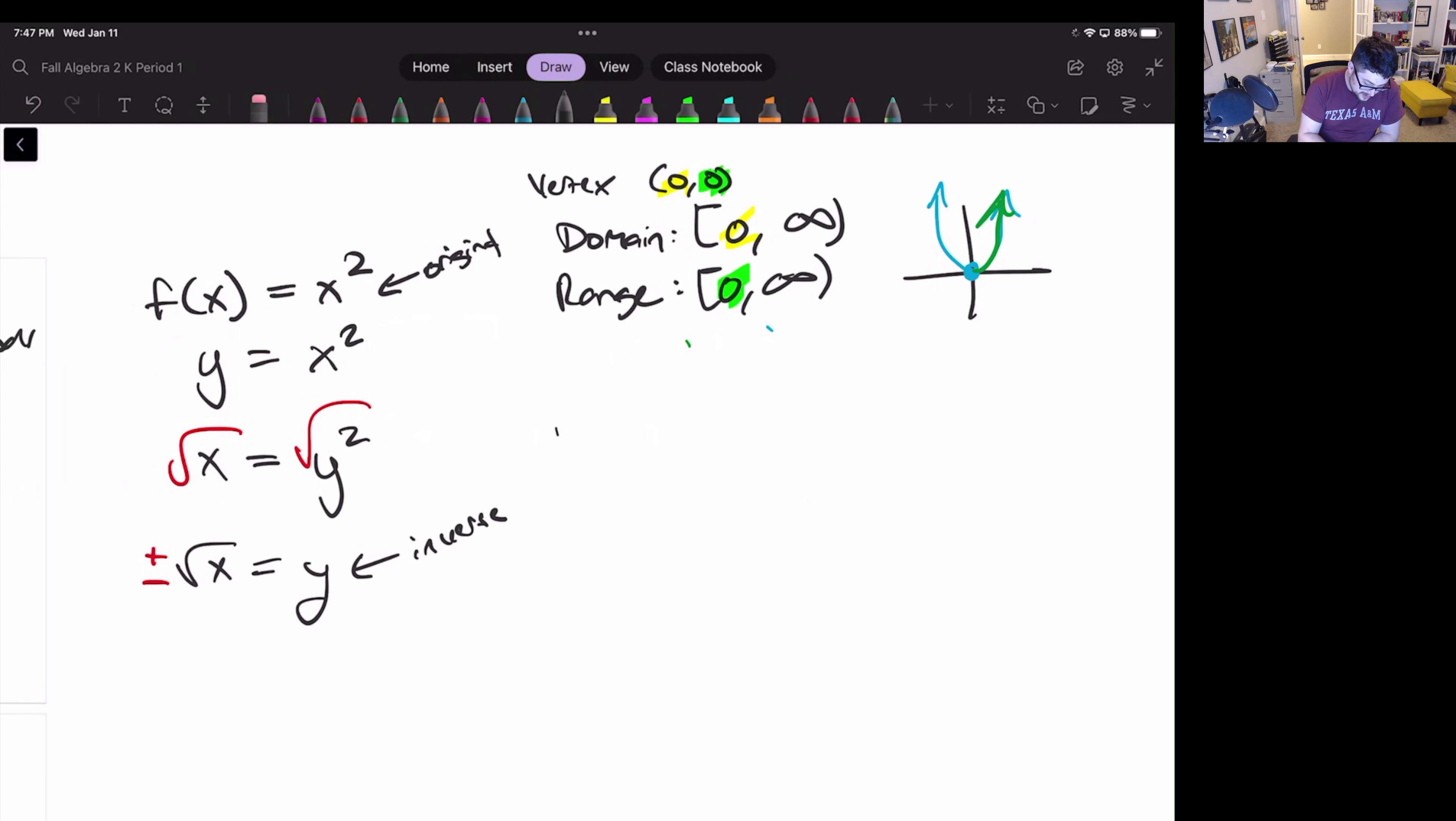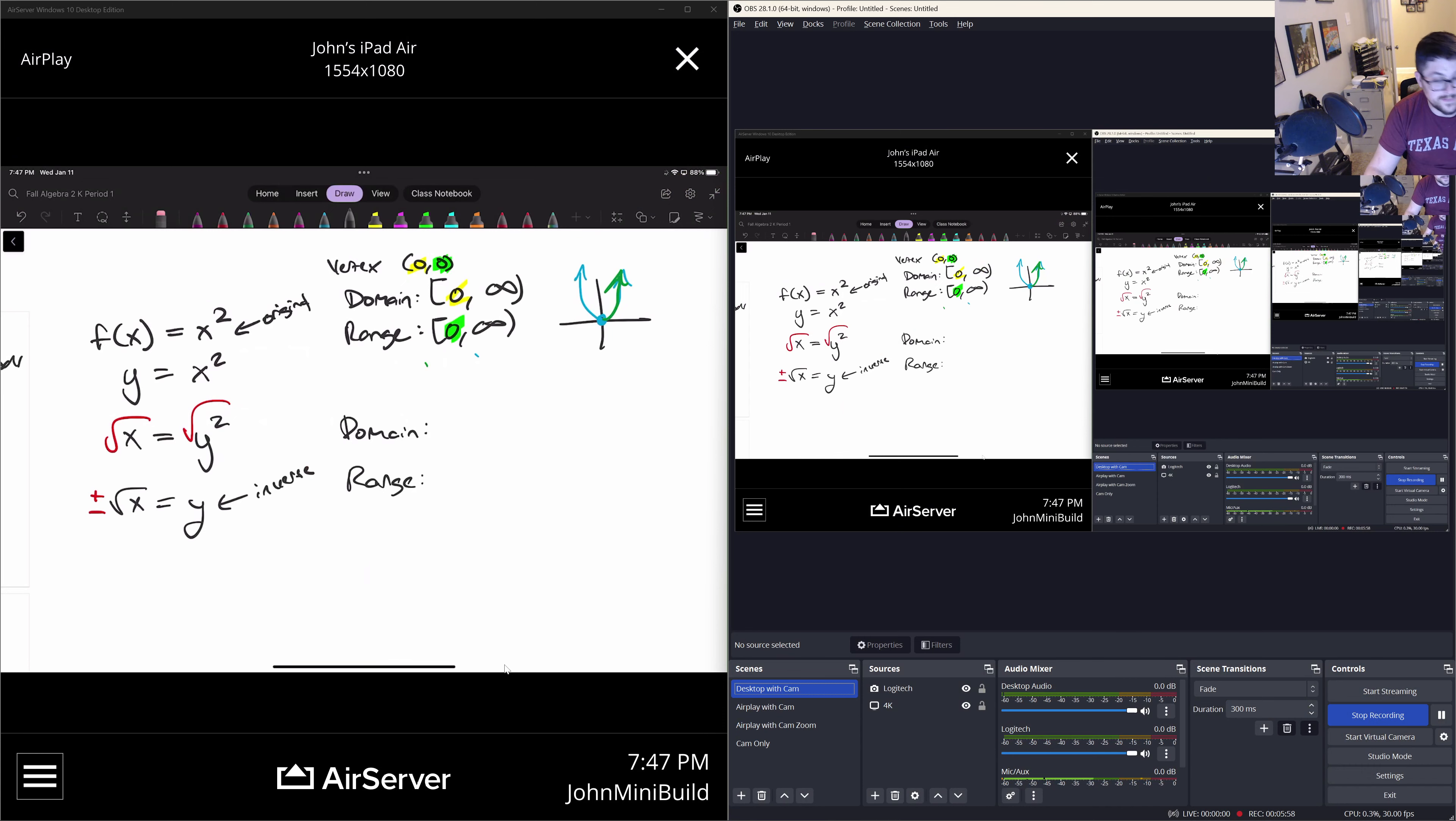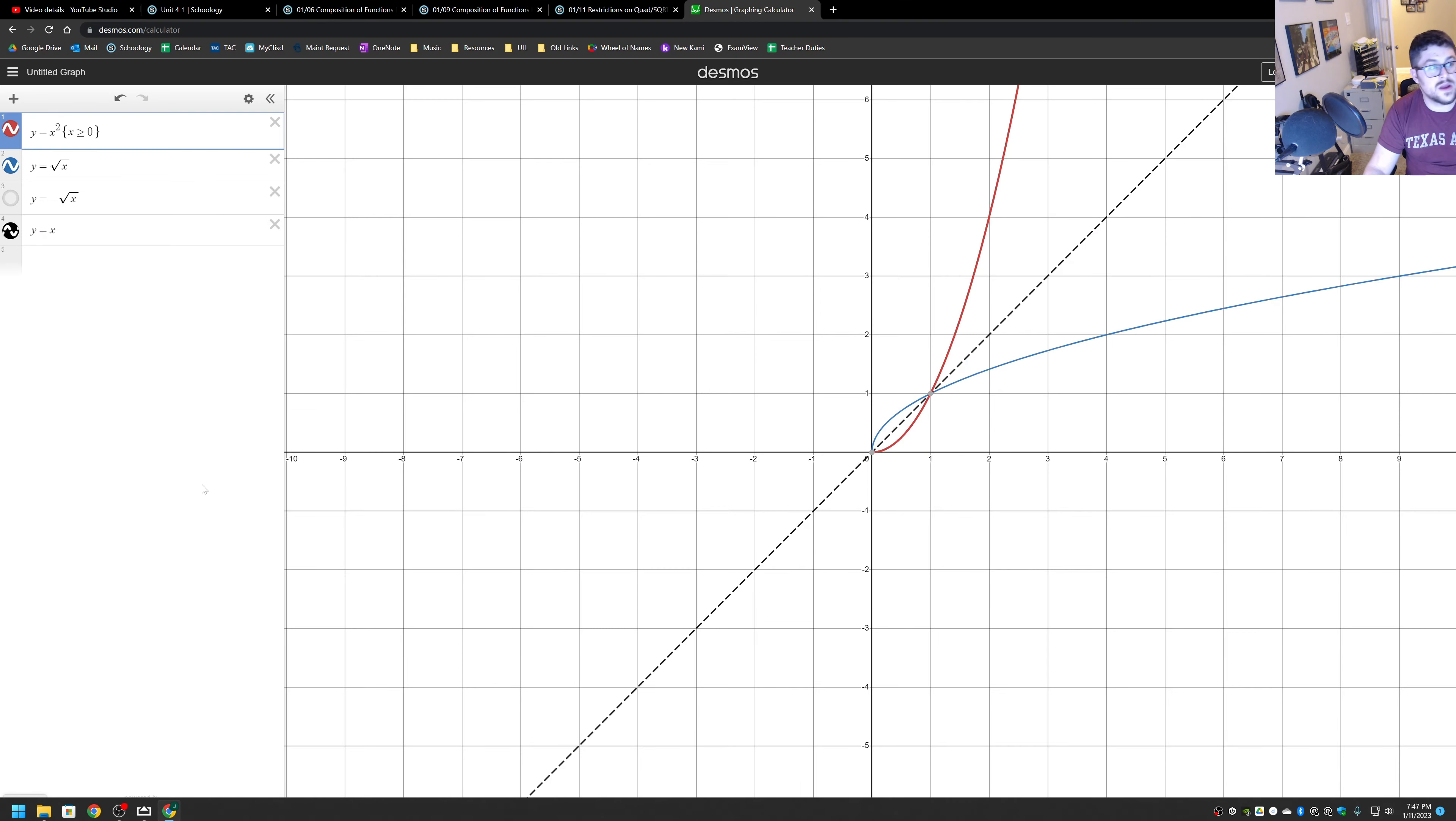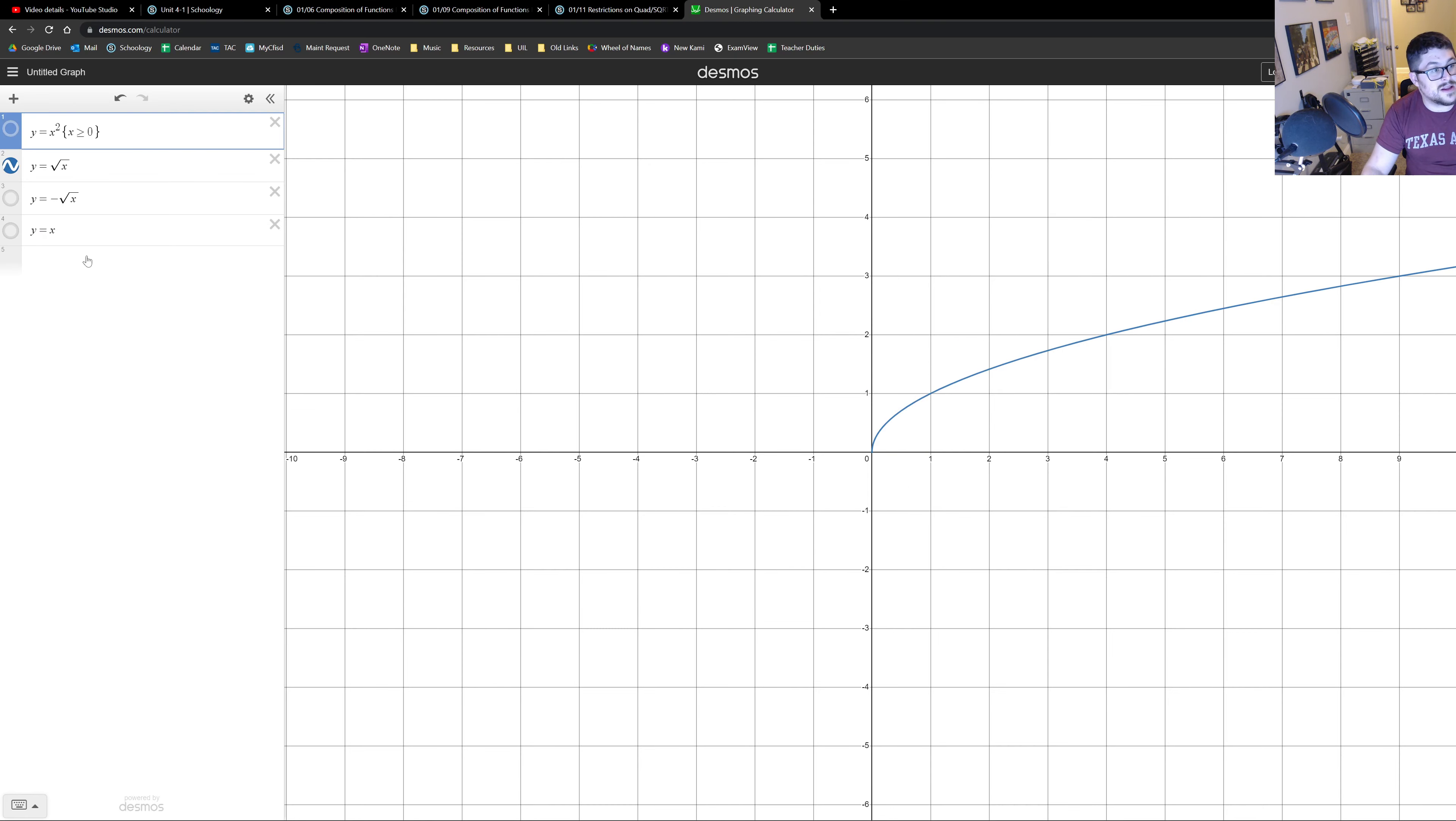Now for the inverse the domain range should be the originals but flipped. And that's what we see. If we switch back to our desktop the inverses starts at zero, zero and goes up and to the right. So our domain is from zero to infinity our range is from zero to infinity.